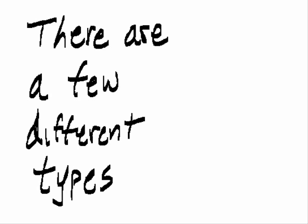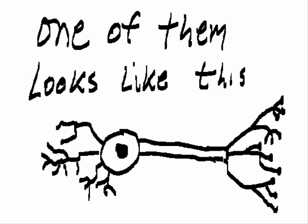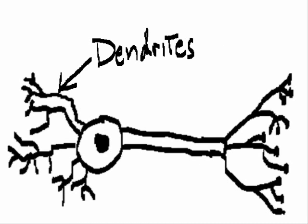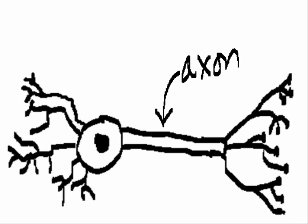There are a few different types. One of them looks like this. Whoa, scary! These are its dendrites, this is the soma, the axon, and...